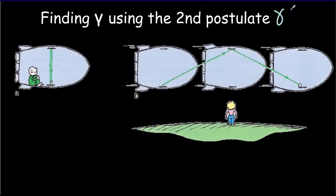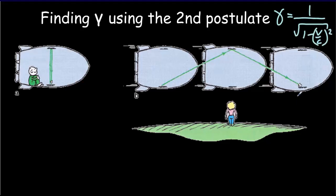In the last video we introduced the gamma factor — the factor that tells us how much length is contracted, mass is increased, and time is dilated. It's given by 1 divided by the square root of 1 minus (v/c)². We're going to prove that formula, at least for the case of time dilation, using only the second postulate — that the speed of light is the same regardless of the observer's motion — and the Pythagorean theorem.